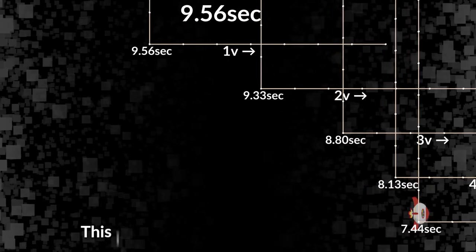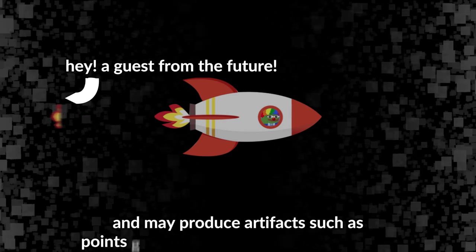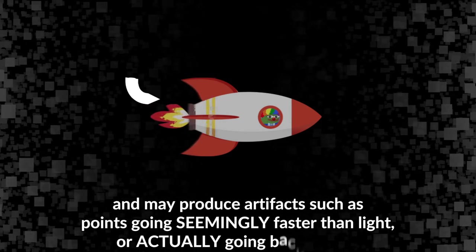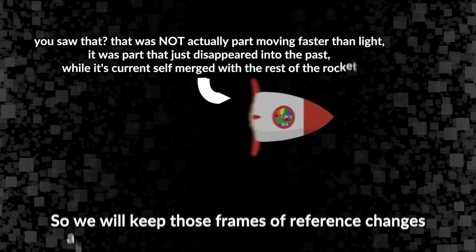This way, accelerating object becomes an object living in one inertial frame of reference for one step of time, then switching to another inertial frame of reference that moves slightly faster relative to us, and so on. This is technically cheating and therefore it introduces effects special relativity does not account for and may produce artifacts such as points seemingly going faster than light or actually going back in time, so we will keep those frames of reference changes as gradual as possible to minimize the artifacts.